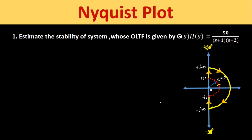Before starting the video, please subscribe to my channel and also press the bell icon so that you can get more updated videos. Question number 1: estimate the stability of the system whose open loop transfer function is given by G(s)·H(s) = 50 divided by (s+1)(s+2).